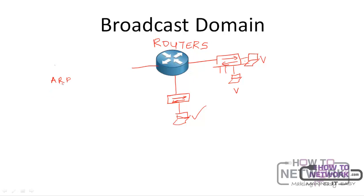We also use broadcast for what is called DHCP — Dynamic Host Configuration Protocol. That's what happens when you connect a host to a network and need it to automatically receive an IP address. It sends a broadcast requesting an IP address so that any DHCP server on the network can assign one. This can also consume a lot of bandwidth if many users are on the same broadcast domain. So it is usually advisable to segment broadcast domains using routers. Switches can also segment broadcast domains, but we will talk about that in a subsequent video.